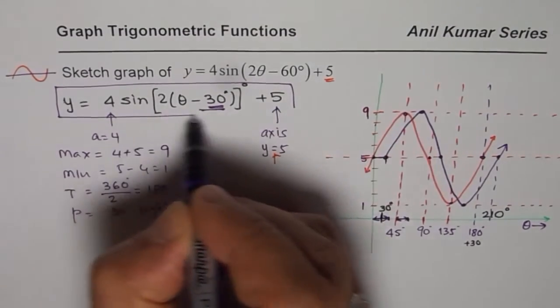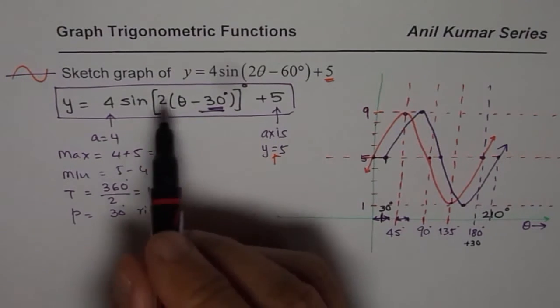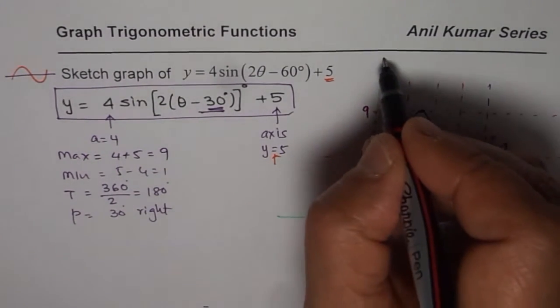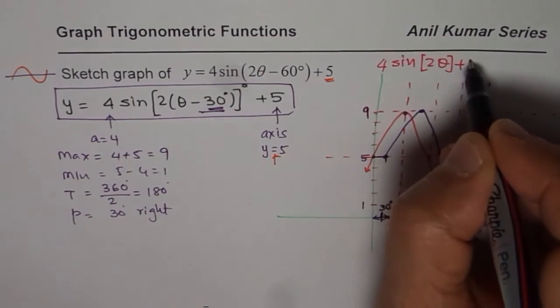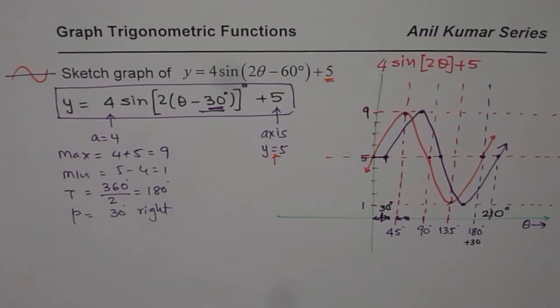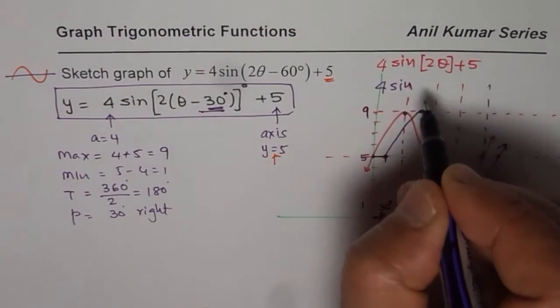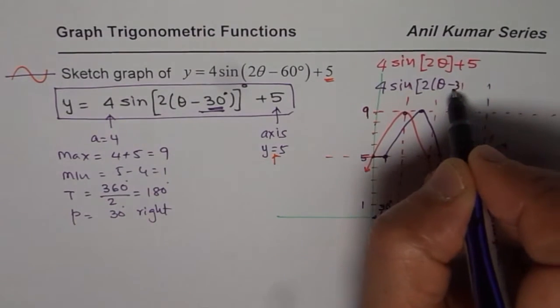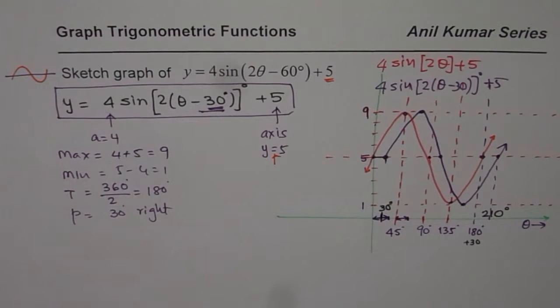I have actually drawn two particular graphs. One which is 4 sine 2 theta plus 5. In the second graph I translate it, so I got 4 sine 2 times theta minus 30 degrees plus 5 translated. Then you get your final result. If you draw like this you are going to quickly draw without any calculations.